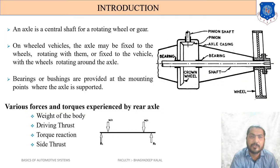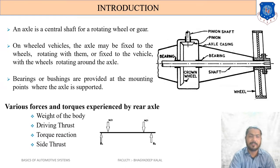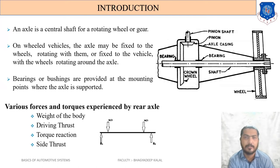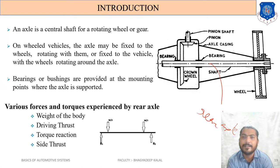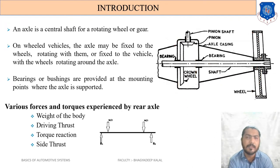An axle is a center shaft for rotating a wheel on a wheeled vehicle. The axle may be fixed to the wheel rotating with it, or fixed to the vehicle with the wheels rotating around the axle. Bearings and bushings are provided at the mounting points where the axle is supported. In this diagram we can see the rear axle connected between the differential mechanism and the wheel hub on which the tire is mounted.